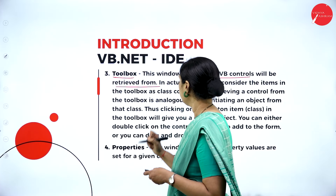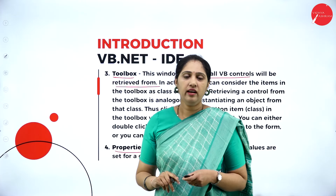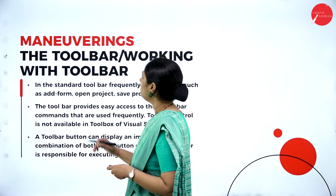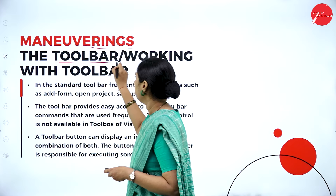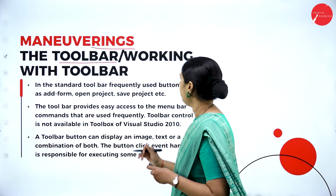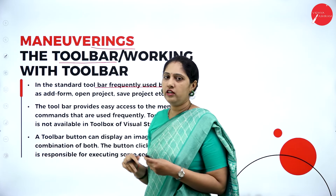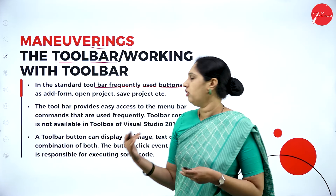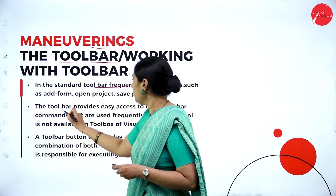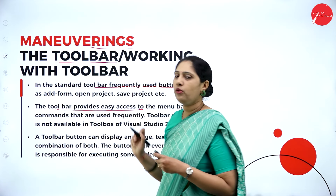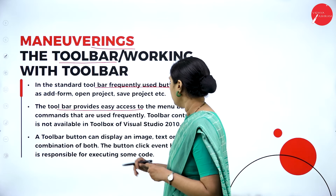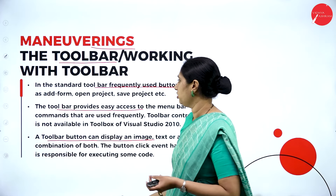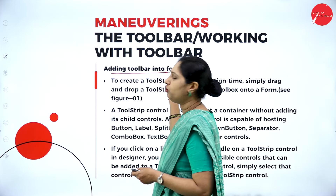The toolbox contains all VB controls such as list box, list view, and many more — use whatever controls you wish. The properties window lets you set properties for any control, such as name, length, and color. The IDE is divided into four parts: solution explorer, form designer window, properties window, and the toolbox.